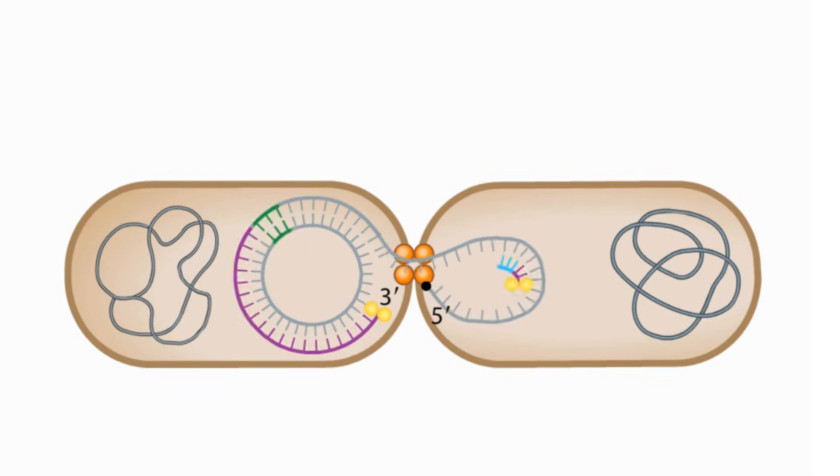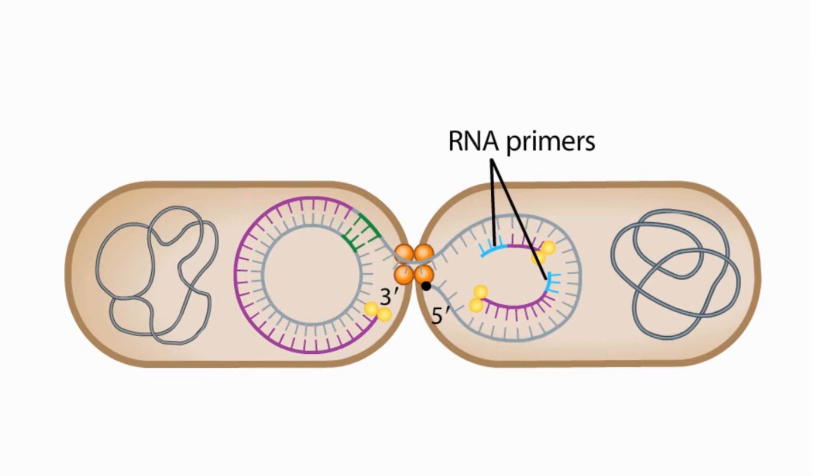In the recipient, the second strand is formed by lagging strand DNA synthesis, which requires synthesis of RNA primers that DNA polymerase can use as starting points. The RNA primers are later replaced by DNA.